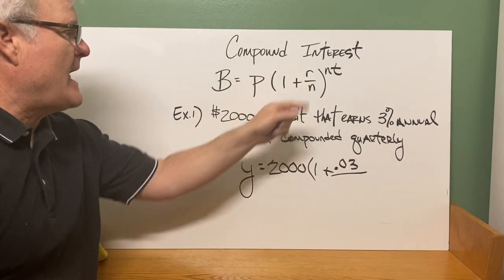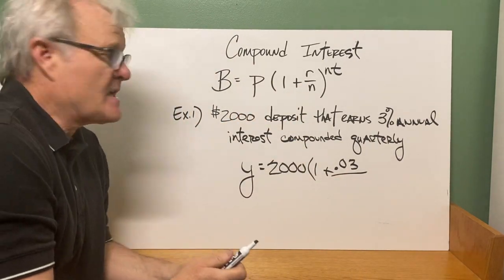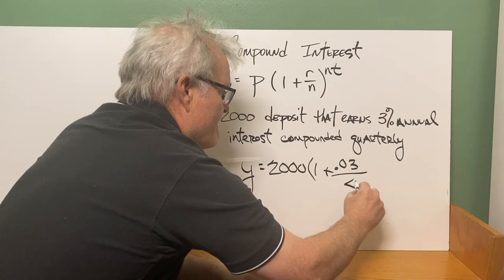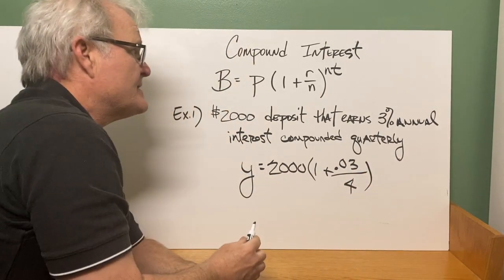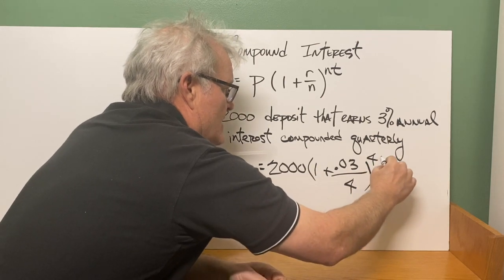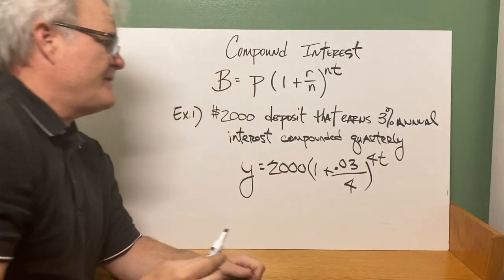And that as a decimal is 0.03. And we are going to divide that by n, which is the number of times it's compounded, which in this case would be four since it was quarterly. We are going to raise that to the, well, it's four times every year times T number of years.